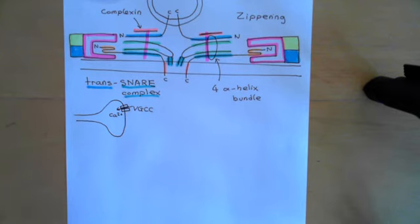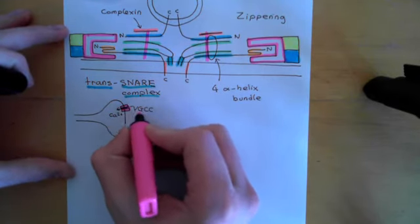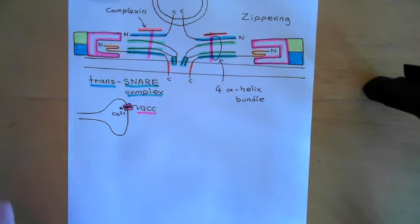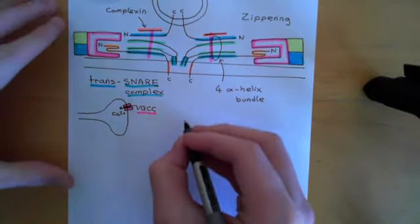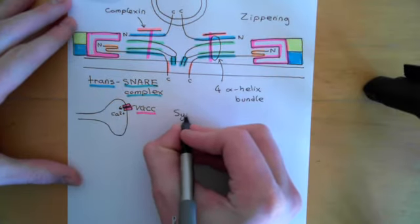How does this occur? The key calcium sensor is a protein known as synaptotagmin. Let's turn our attention now to synaptotagmin proteins.